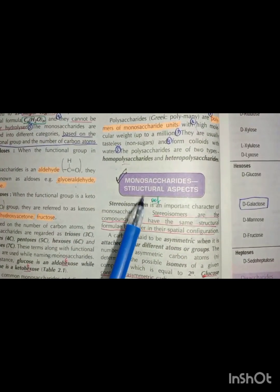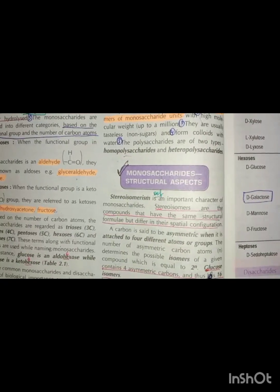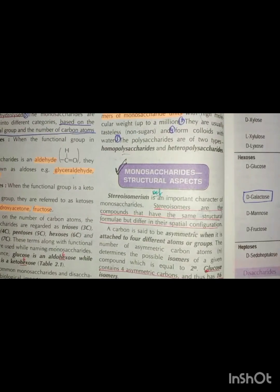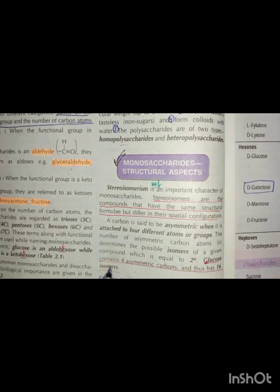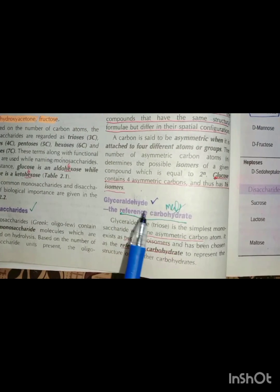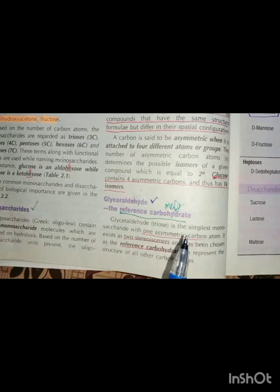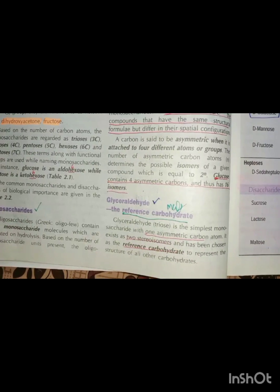First you have to define stereoisomerism. This is the glucose. The asymmetric carbon and isomers are MCQs. After that, you have to remember glyceraldehyde — it is the reference carbohydrate. The stereoisomerism involving the asymmetric carbon — this is MCQ material.